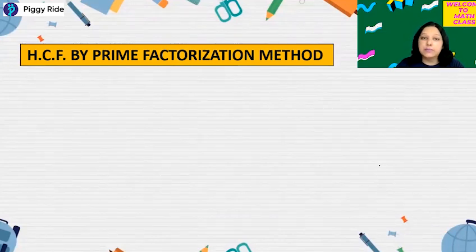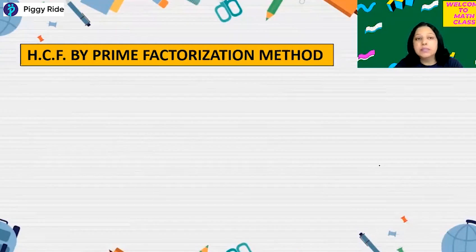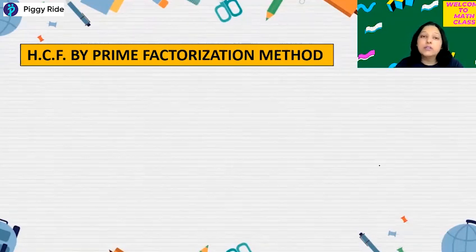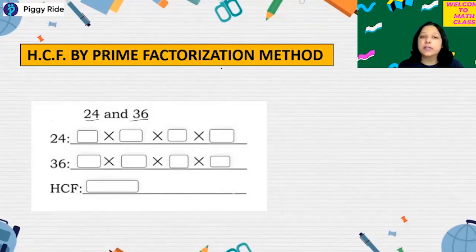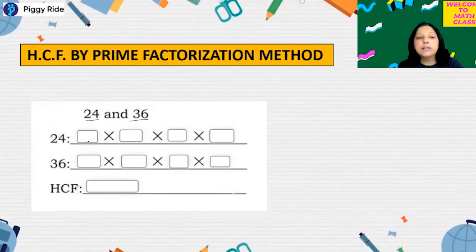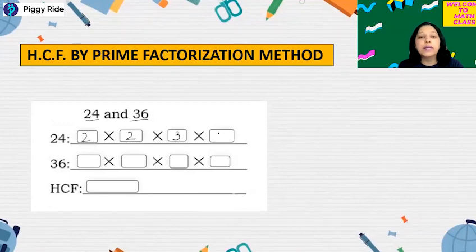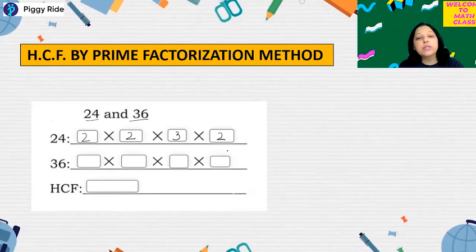The second method is by prime factorization. You all know how to find the prime factors — prime factorization uses prime numbers like 2, 3, 5 and so on. Now the question is: find the HCF of 24 and 36 with the help of prime factorization. So now quickly write down the prime factorization of 24. The prime factorization of 24 is 2 into 2 into 3 into 2.